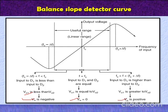And in third case, V0 is positive because input to D1 is higher than the input to D2. It means V01 is greater than V02. So it is the slope curve of the balance slope detector.